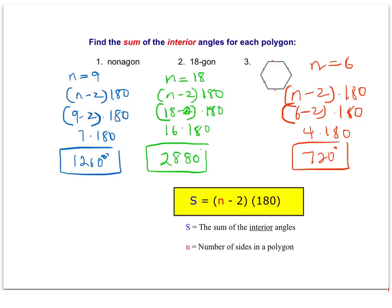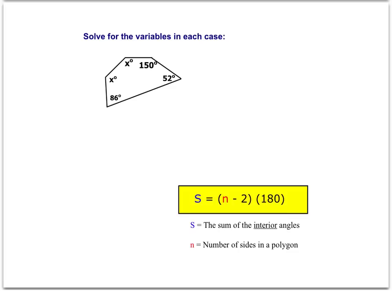That is just finding n and plugging the number into the formula. Now we can use what we just learned to solve more complex problems. We're asked to solve for x in this figure, and these two angles are each labeled x. We're going to set up an equation, but first we need to know the sum of the interior angles of this polygon. This is a two-part problem: first use the formula to find what all the angles add up to, then use that to set up our equation.